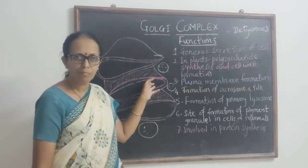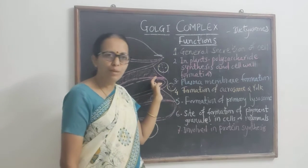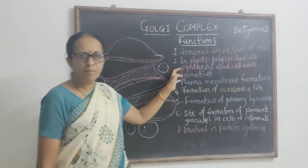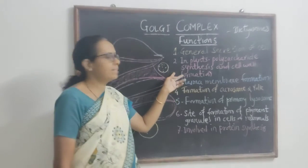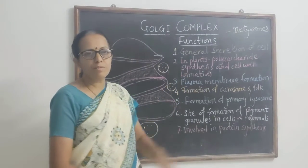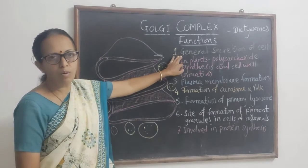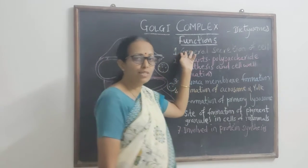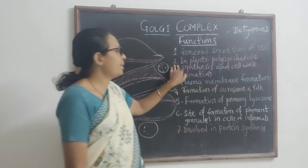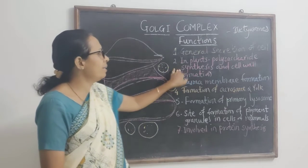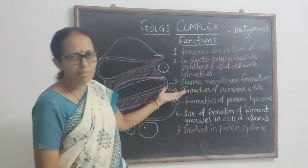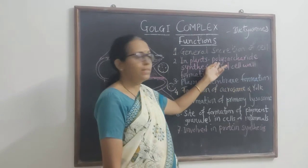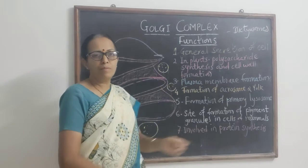Now we will see the functions of the Golgi complex. It plays a very important role in both plant and animal cells. The first function is in the general secretion of the cell — it helps in the process of general secretion. The second function, particularly in plant cells, is that they actively secrete and synthesize polysaccharides.